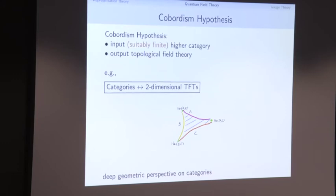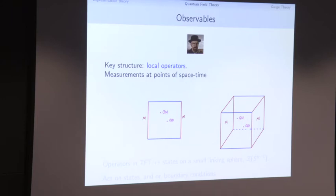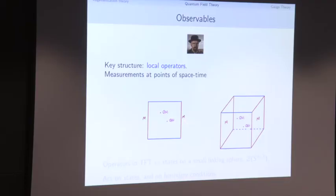Now we've understood the picture of quantum field theory in terms of states, let's go back to the Heisenberg picture. In quantum field theory we also need local operators — measurements we can make at points of spacetime. In topological field theory, this structure is already encoded in what we've said: we take points and cut out little disks around them, producing a cobordism. So local operators in the topological field theory are just given by states on a small sphere — and since we're doing topological field theory, we don't need to say 'tiny': it's a state on a sphere.